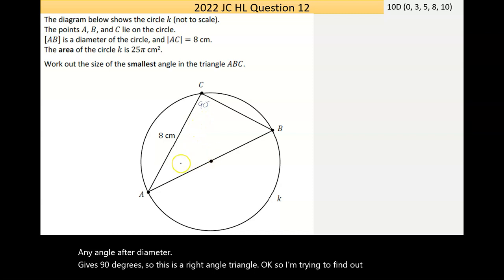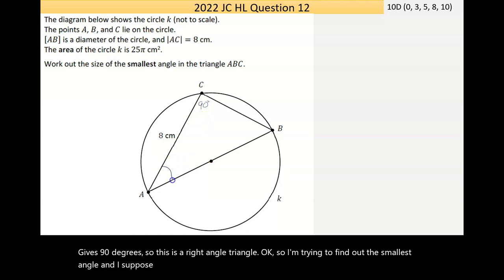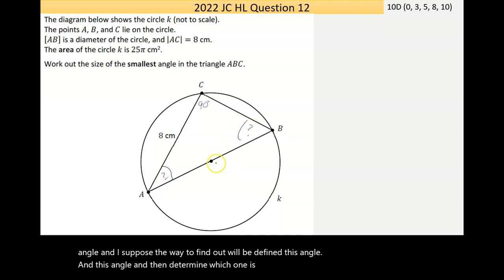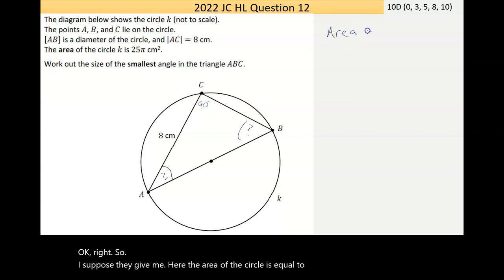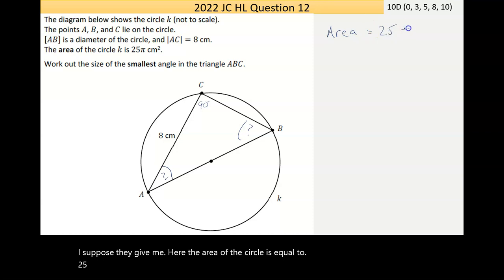So I'm trying to find out the smallest angle. And I suppose the way to find out would be to find this angle and this angle, and then determine which one is smallest. Right, so I suppose they give me here the area of the circle is equal to 25π centimeters squared.